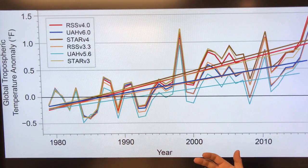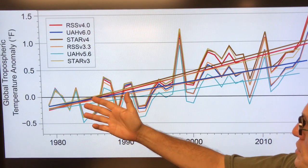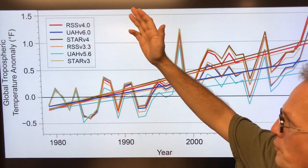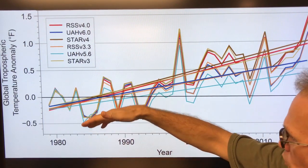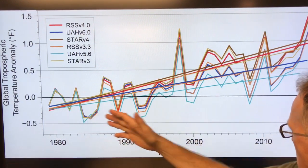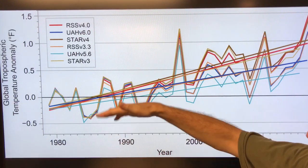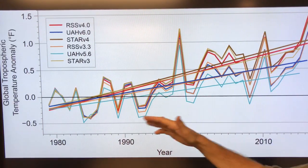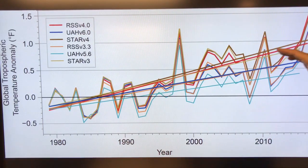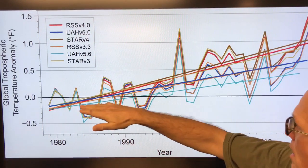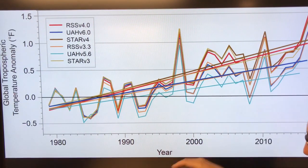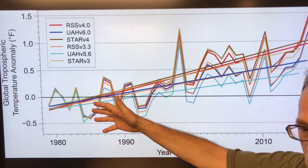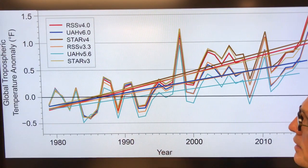This is the global tropospheric temperature anomaly. There are six different data sets here, from 1980 to 2016. It shows the data fluctuation and then fits a line to it. They're all increasing — showing rapid temperature rise since 1980.